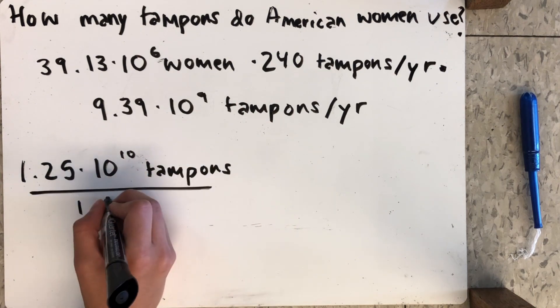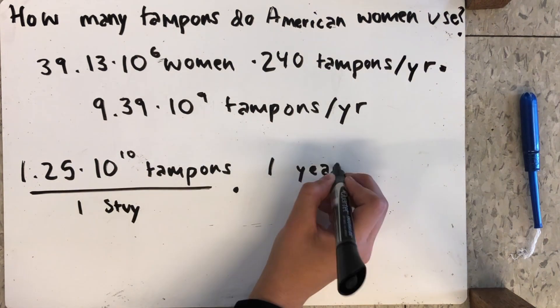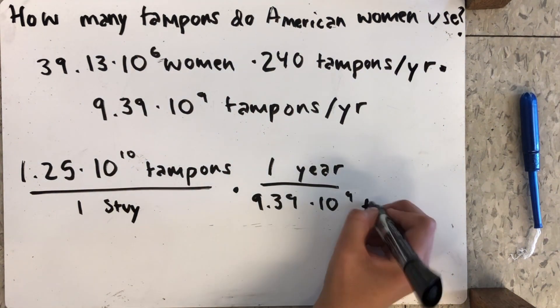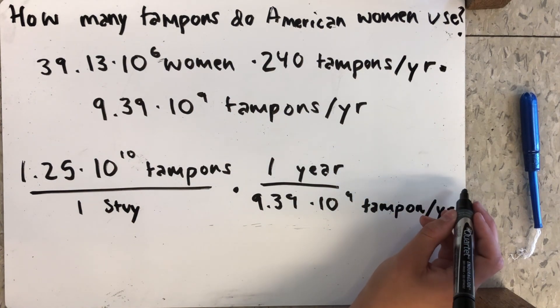By creating another dimensional analysis proportion, we find that to fill up Stuy, American women would only take 1.33 years.